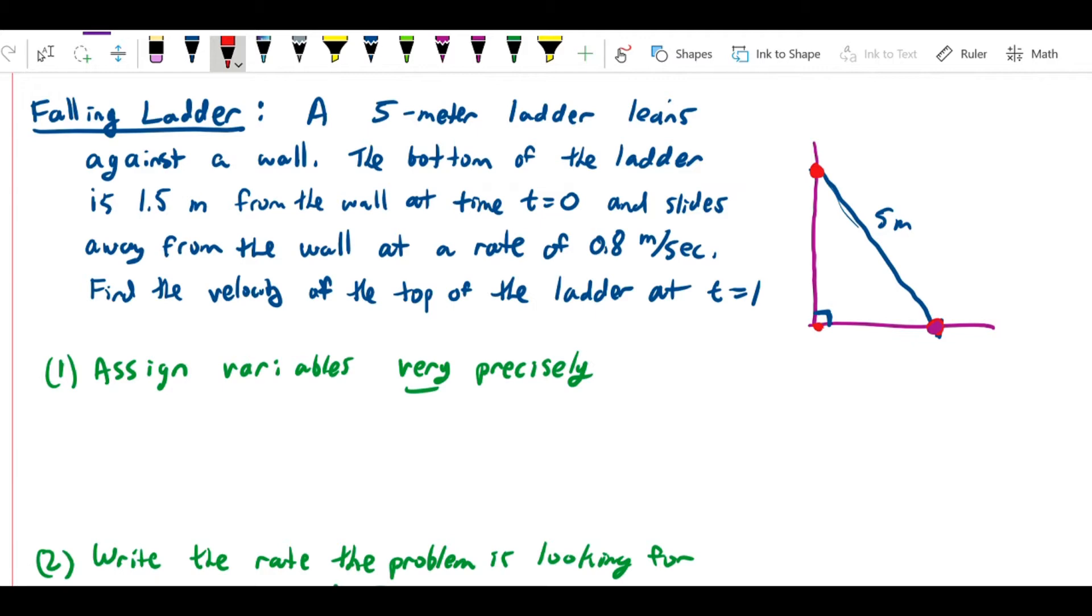Here's what we have to do. I'm going to start by assigning variables very precisely. I'm simply going to label the horizontal distance, the distance between the bottom of the ladder and the wall, x.